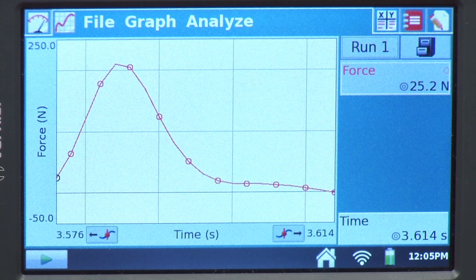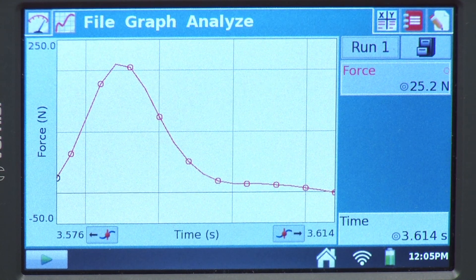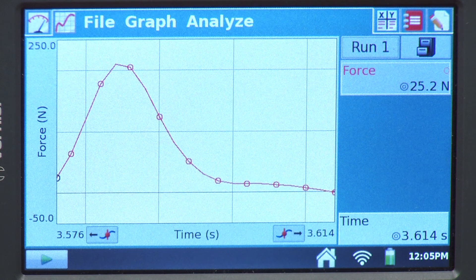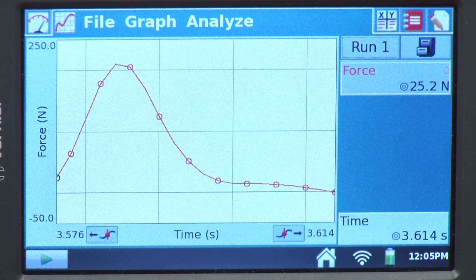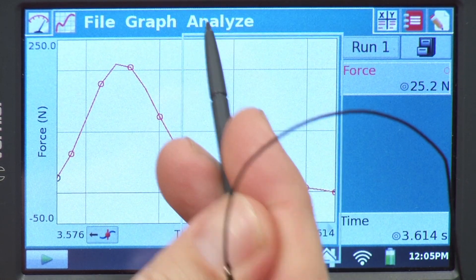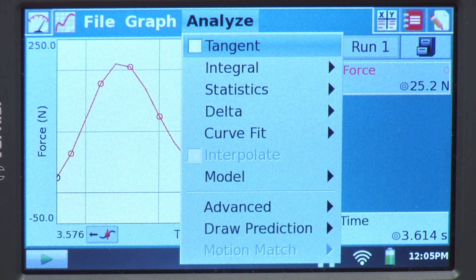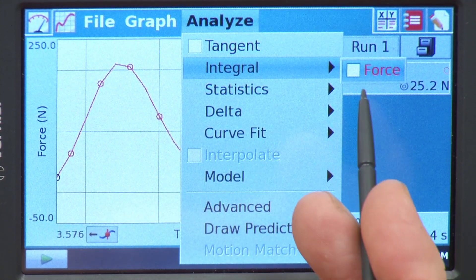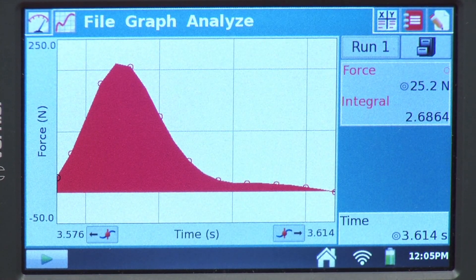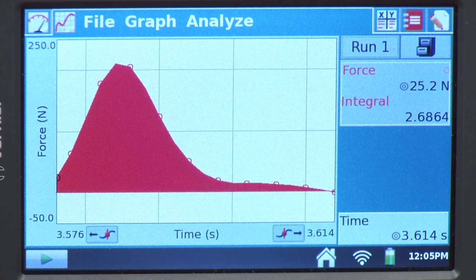I might want to analyze this with an integral. I might want to be able to get the area under the curve to get the impulse for the collision. To do this, I just go up to Analyze. And because I've highlighted that region, when I do the integral, it's going to use just the data under that curve. And then I get my integral there.